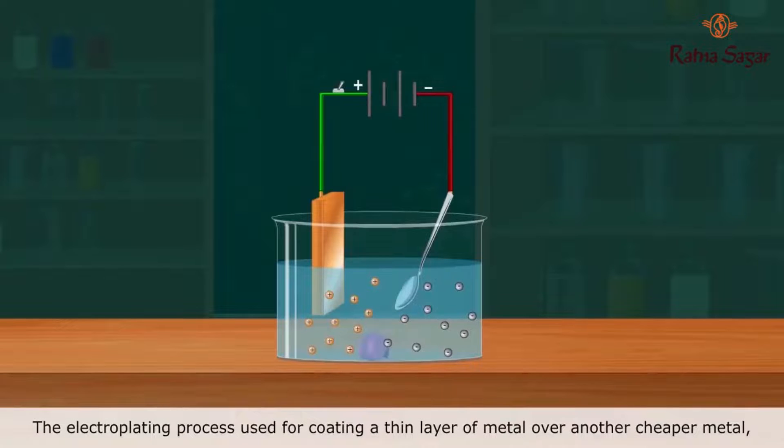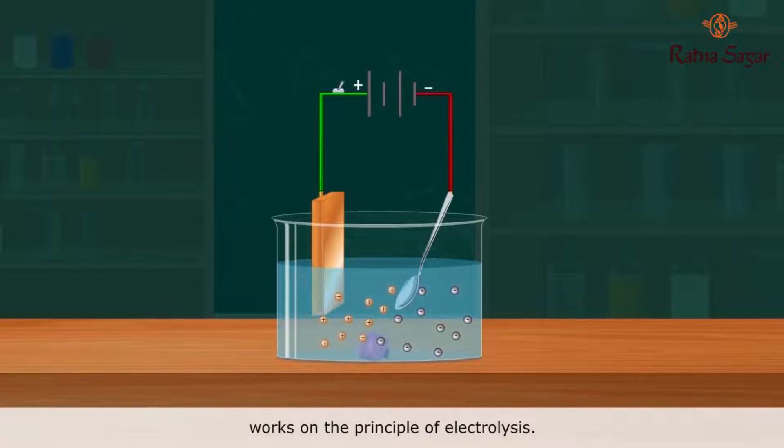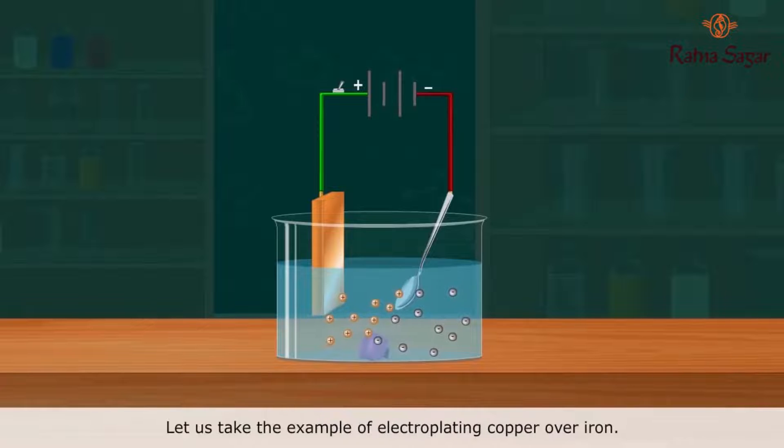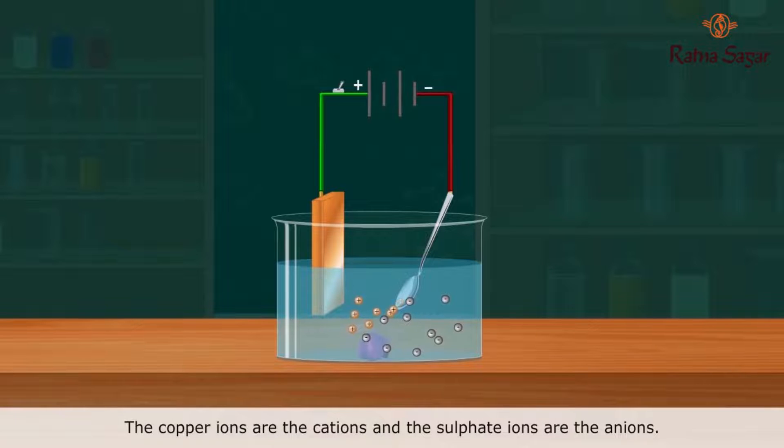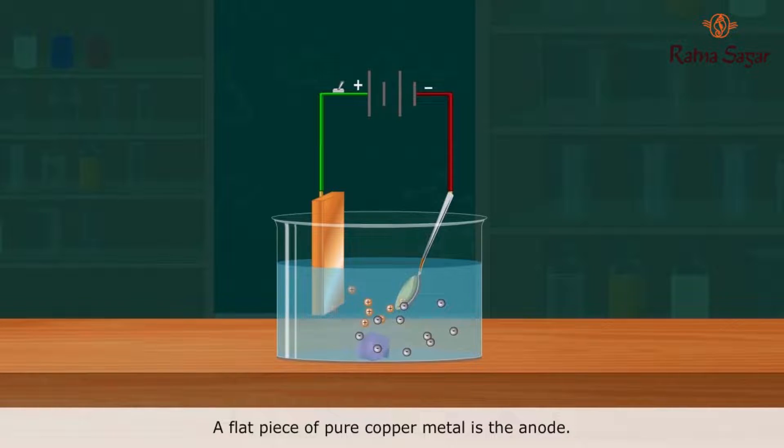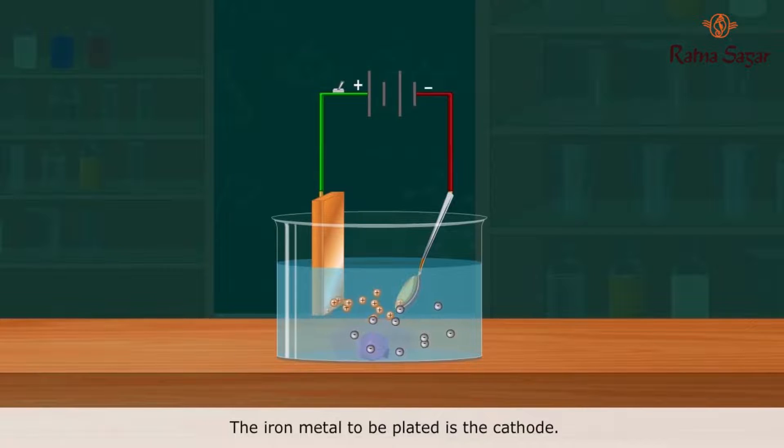The electroplating process used for coating a thin layer of metal over another cheaper metal works on the principle of electrolysis. Let us take the example of electroplating copper over iron. For this, copper sulfate dissolved in water is taken as the electrolyte. The copper ions are the cations and the sulfate ions are the anions. A flat piece of pure copper metal is the anode. The iron metal to be plated is the cathode.